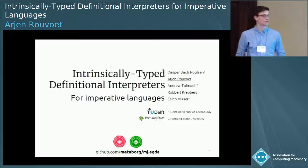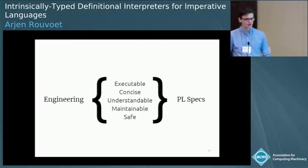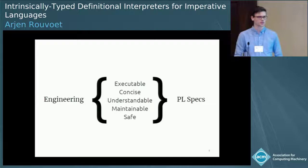Good afternoon, everyone. This is joint work with Kasper Bach-Polsen, Andrew Tolmak, who's here, Robert Krebers, also here, and EOCO somewhere. This work is about defining semantics for languages in such a way that we get a specification that is executable first, so that we may understand and test the adequacy of the specification through testing.